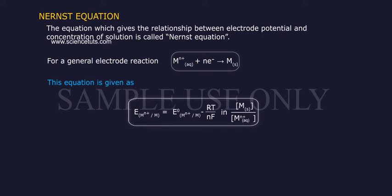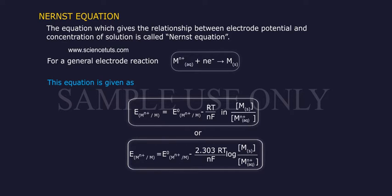This equation is given as E(M^(n+)/M) = E°(M^(n+)/M) - RT/(nF) ln [M(solid)]/[M^(n+)(aq)]. Or E°(M^(n+)/M) - 2.303RT/(nF) log [M(solid)]/[M^(n+)(aq)].